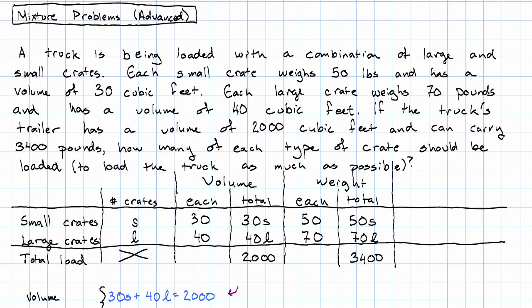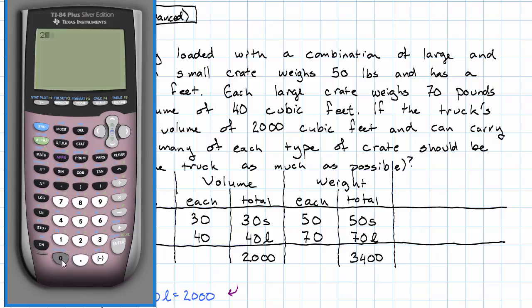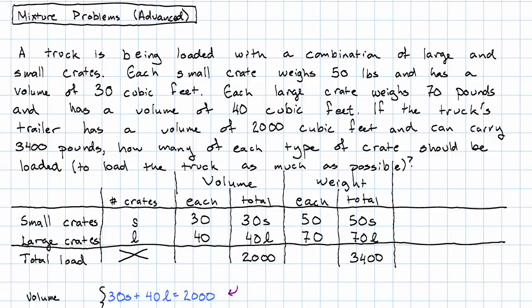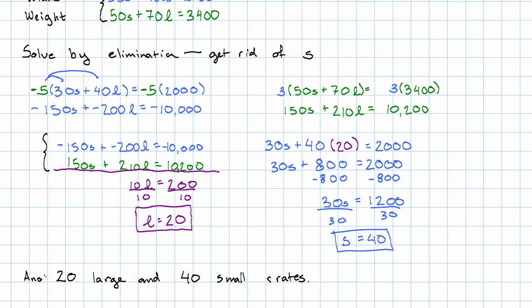Going back to the story to check that, if we have 20 large crates at 40 cubic feet each, plus 40 small crates at 30 cubic feet each, that really is the 2,000 cubic feet total volume. 20 large at 70 pounds each, plus 40 small at 50 pounds each, that really is the 3,400 pounds total load. Notice we went back to the story for that information. We didn't go to the table or to the equations, because we wanted to catch if we had made a mistake in the table or in the equations. That answer checks out, so we really are correct.